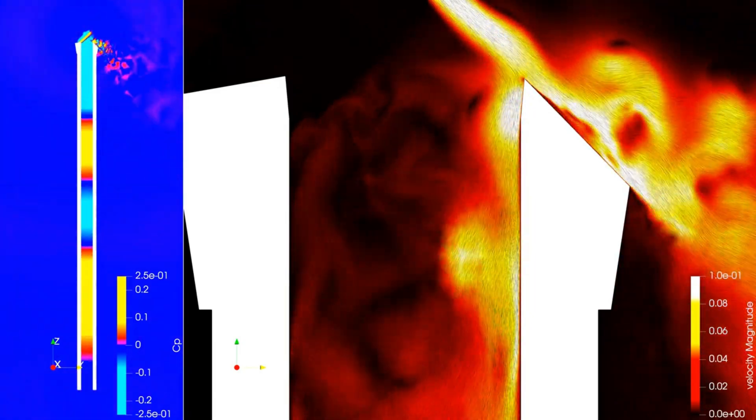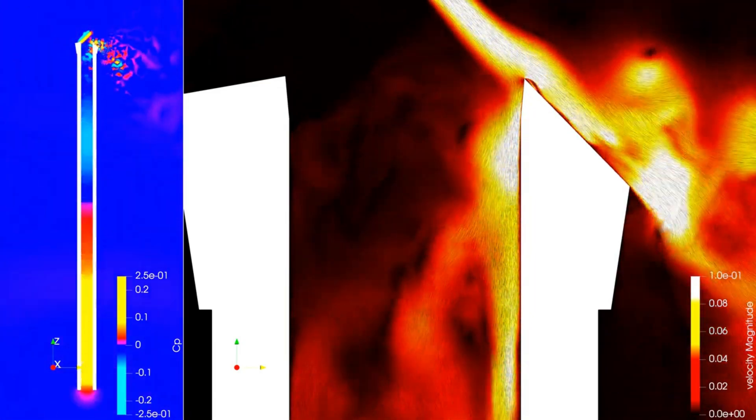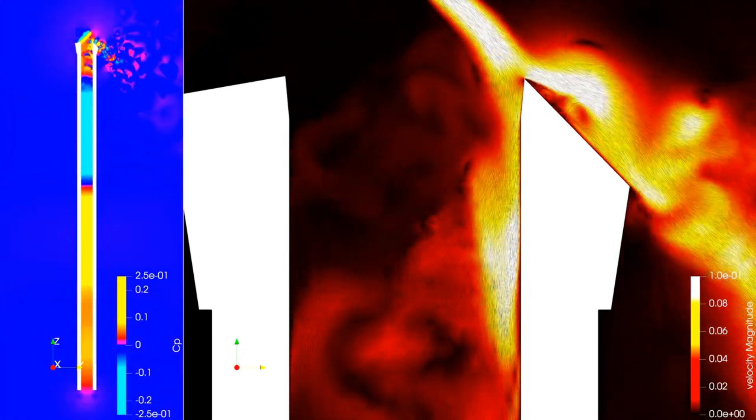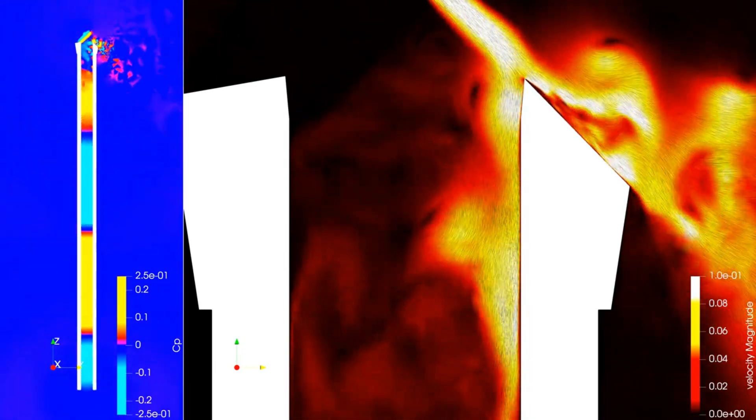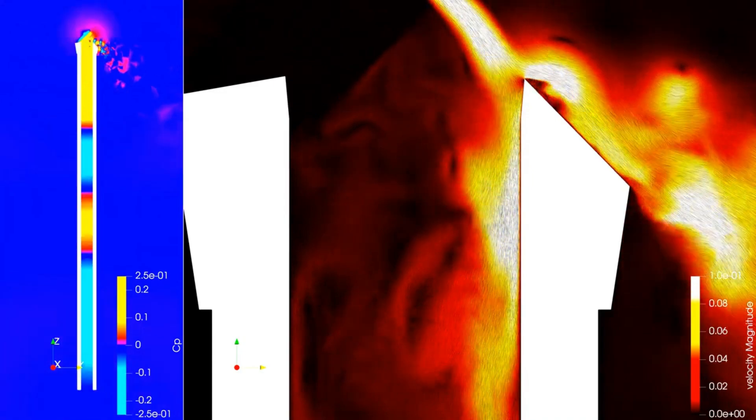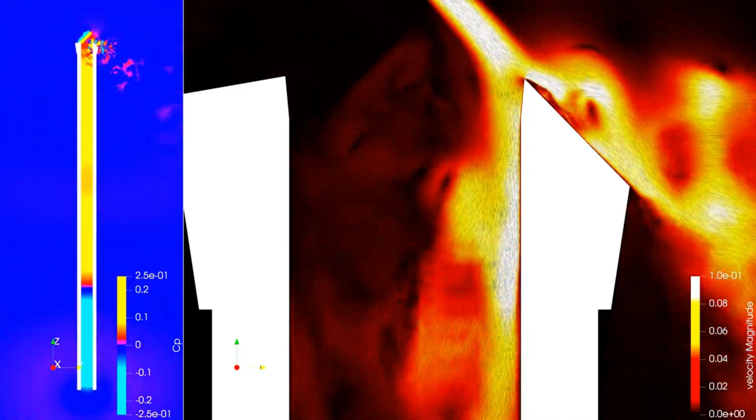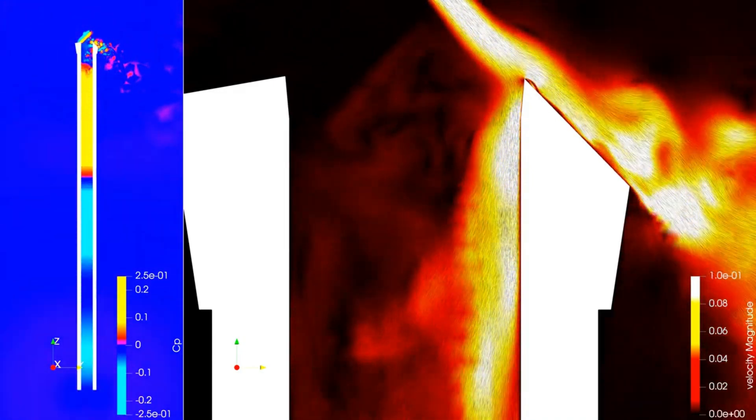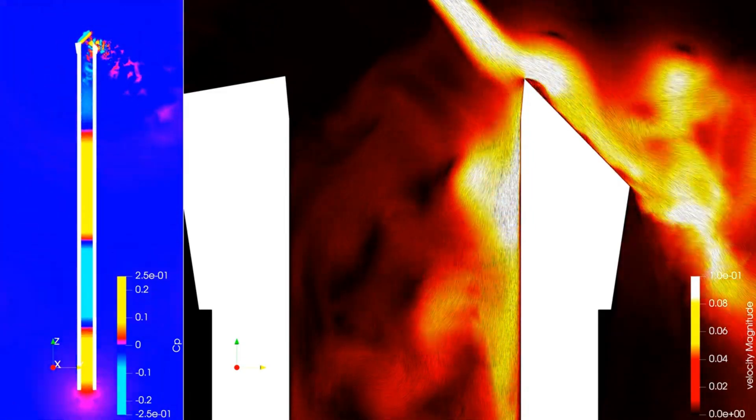When the jet blows into the flute, the mass in the jet is blown into the flute, and that creates a pressure source that transmits down into the flute and reflects back. When the jet blows out of the flute, there is no such pressure source.